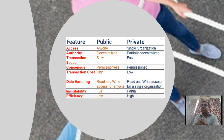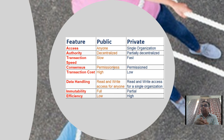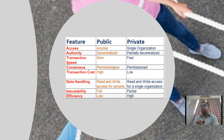Controls are with the single organization, therefore the private blockchain is partially decentralized. With fewer users, it takes less time to approve transactions, so transaction speed is fast. It is permissioned, and transaction cost is less compared to public. Data handling — read and write access — depends upon the permissions given by the single organization.